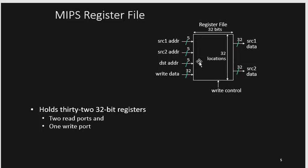This is the basic register file in MIPS. As you can see, there's source address 1 and source address 2 — these are the addresses, not the data. The 32-bit data comes out from the read ports. These 5-bit fields just contain the address of the register. Source 1 address is 5 bits, source 2 address is 5 bits, and destination address is 5 bits. We have 2 read ports and 1 write port — the write port is for writing data back.